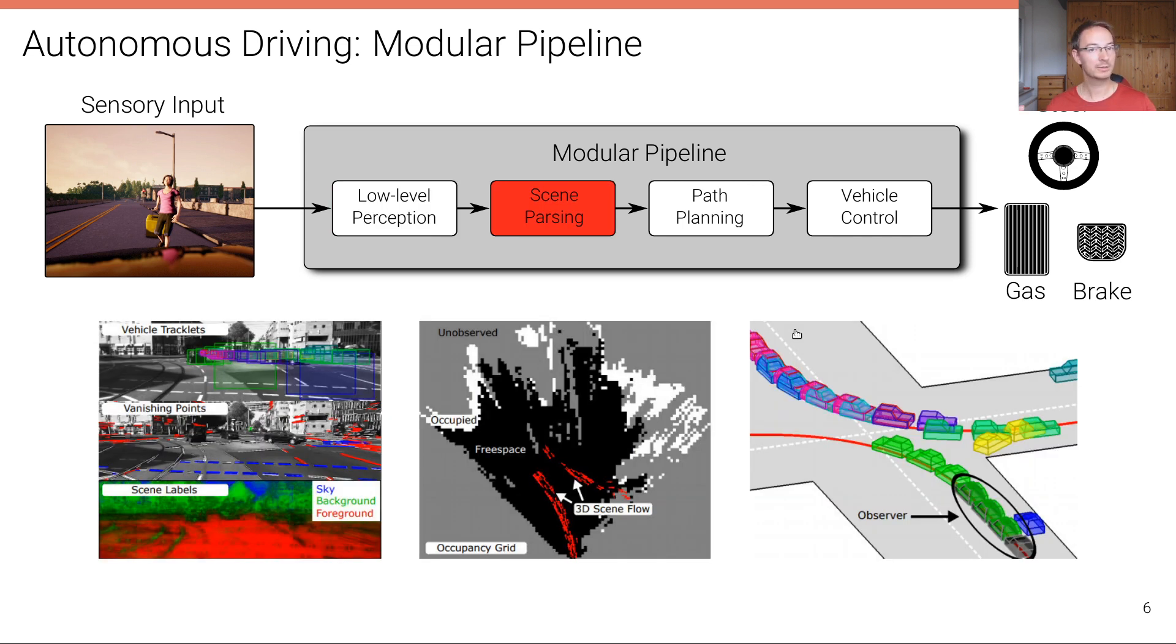In the second stage, all this perceived information must be consolidated into one robust scene representation. That's what is called scene parsing here. Here on the left, you can see an example where vehicle tracks, vanishing points, and lane markings, and scene labels are integrated into one single representation from which a consistent scene representation that relates all the other traffic participants to the agent here in black, to the observer, is demonstrated.